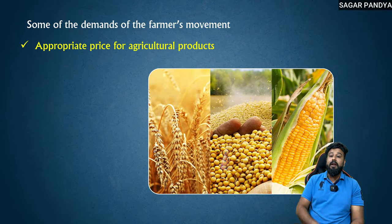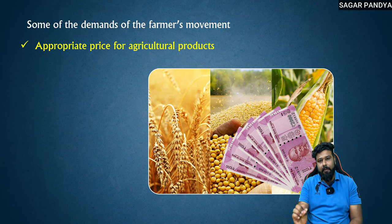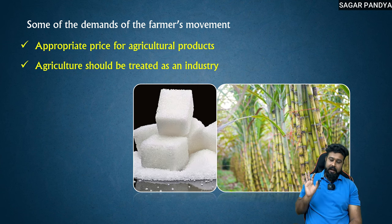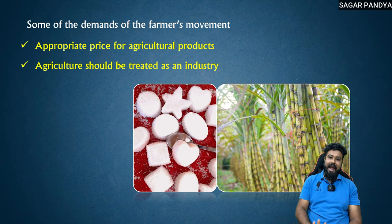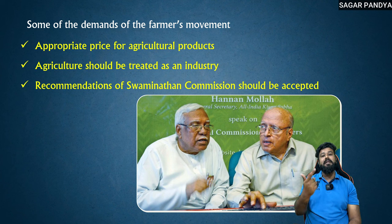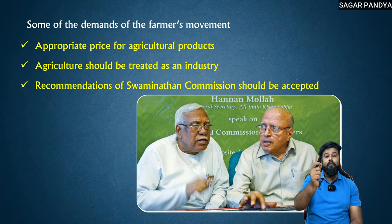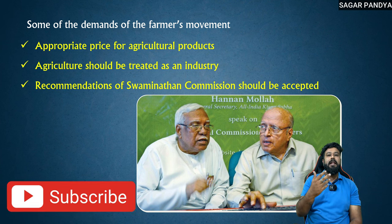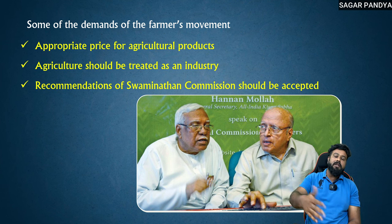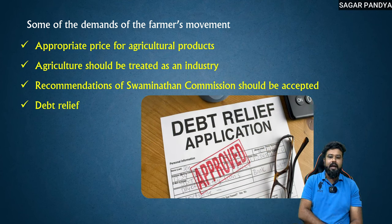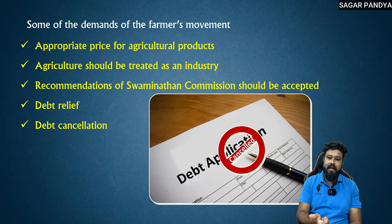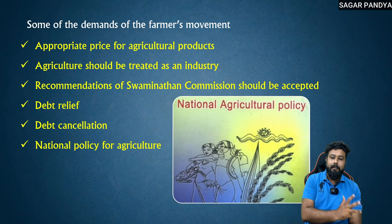So some of the demands of the farmers movement were: give us a proper price for what we produce — appropriate price for our agricultural products. Second, agriculture should be treated as an industry. The Swaminathan Commission gave recommendations to the Government of India which should be approved, giving huge benefits to farmers and reducing their taxes. Many farmers had taken loans — debt had accumulated — and debt relief and debt cancellation was given. Sometimes the loan was discounted, sometimes the loan was entirely cancelled. And a national policy for agriculture was made.